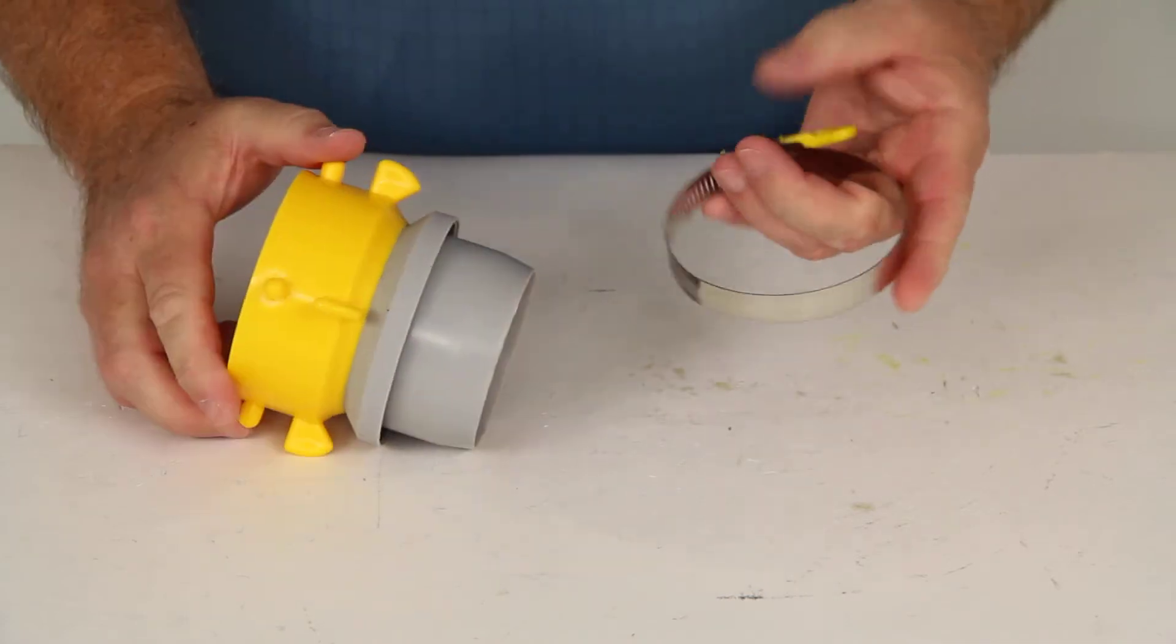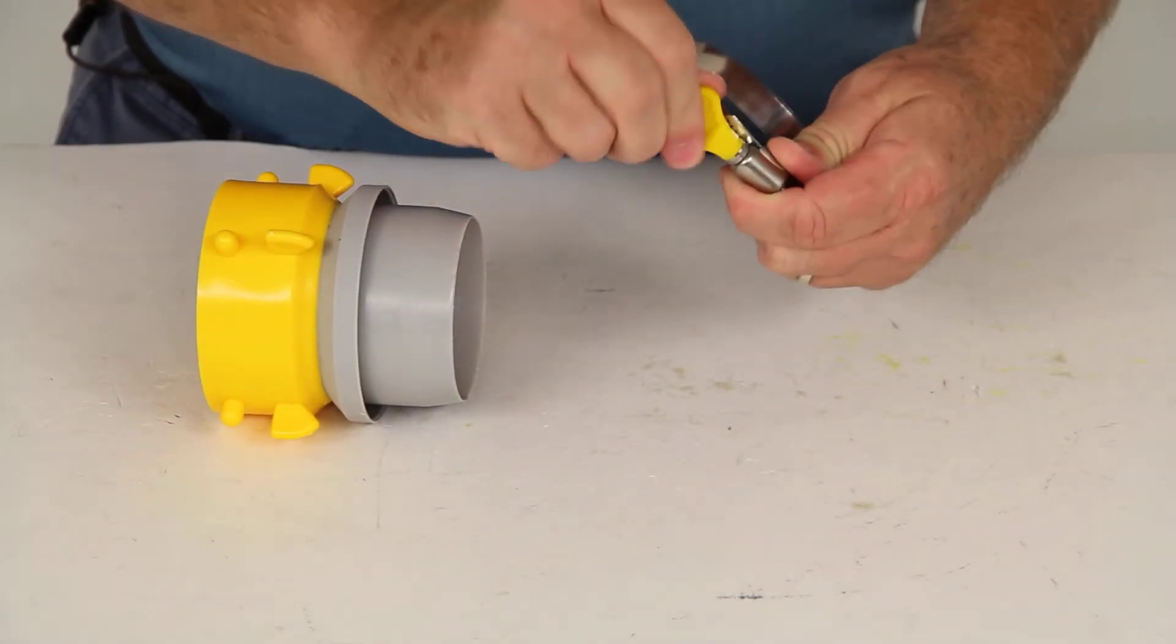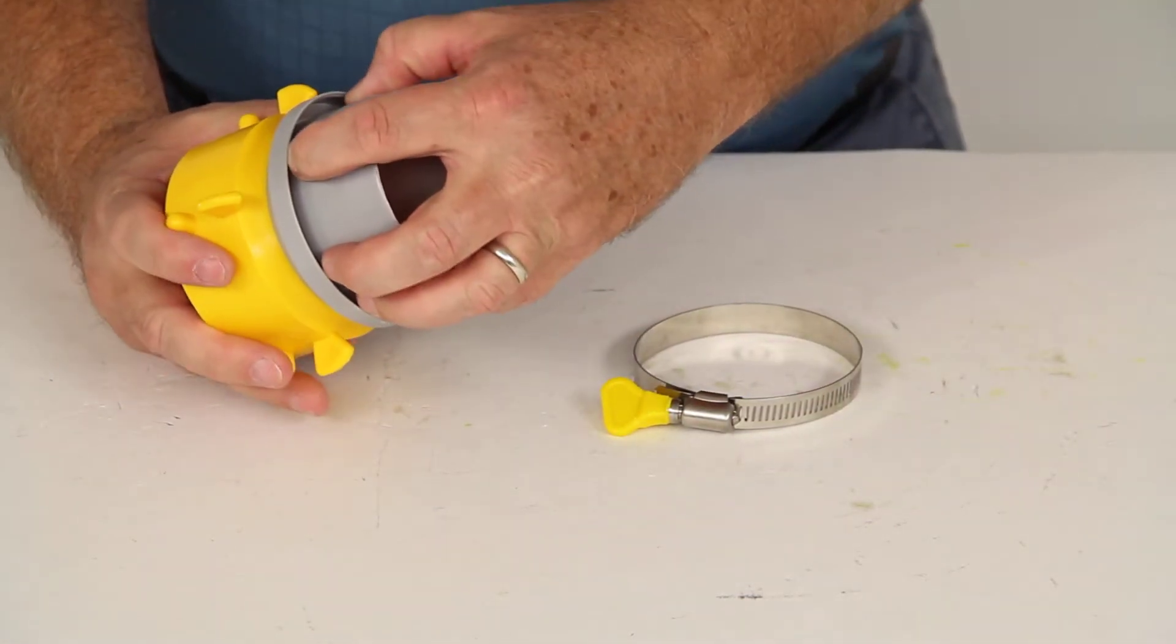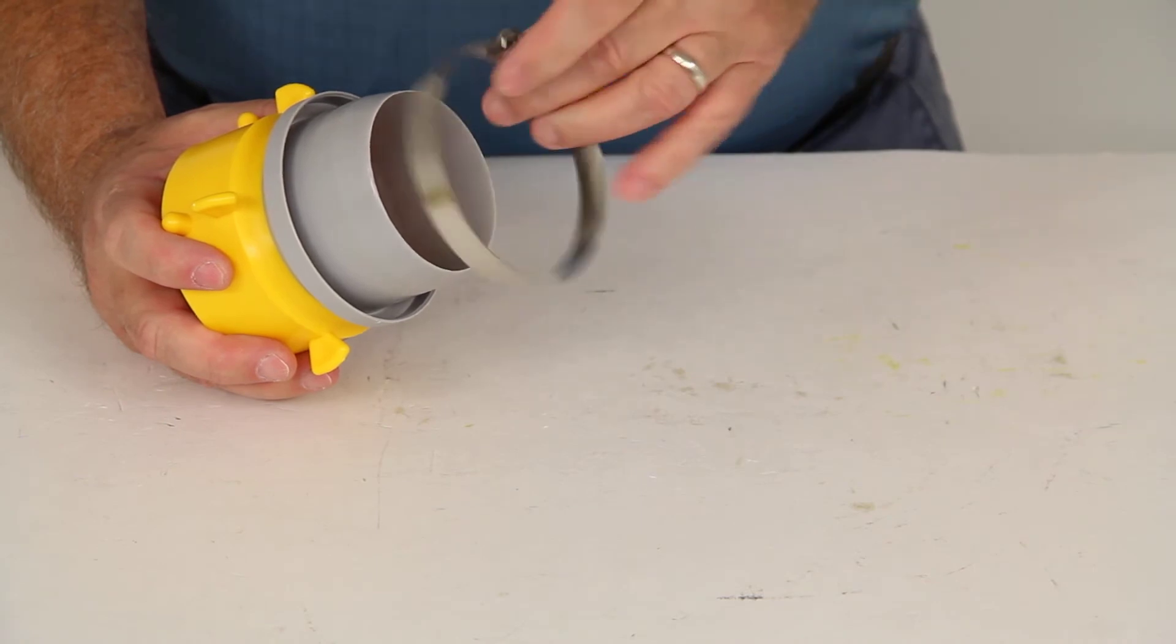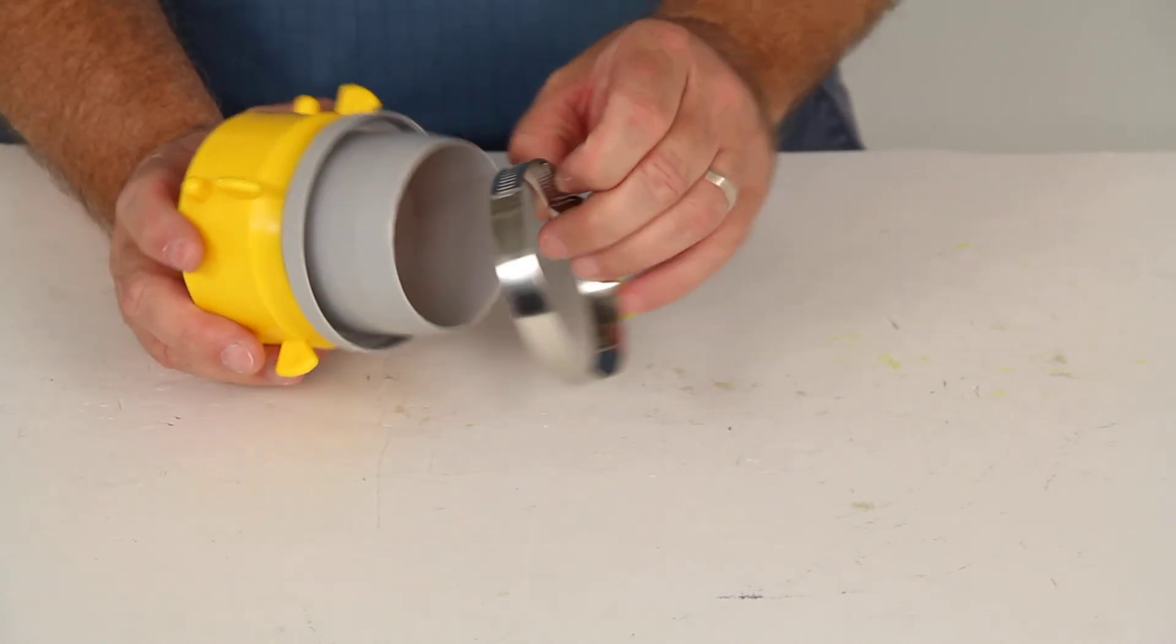It does include this twisted clamp. It has a little twist knob on here that you can use to tighten it or loosen it. When you connect this on this end to your hose, you would use this twisted clamp to tighten it down and secure the fitting to the hose.